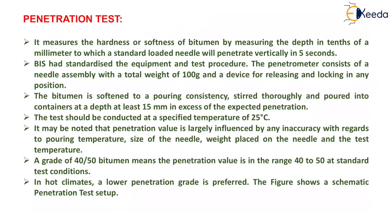The bitumen is softened to a pouring consistency, stirred thoroughly, and poured into a container at a depth of at least 15 mm in excess of the expected penetration. The test should be conducted at a specified temperature of 25 degrees Celsius. It may be noted that the penetration value is largely influenced by any inaccuracy with regards to pouring temperature, size of the needle, weight placed on the needle, and the test temperature. A grade of 40/50 bitumen means the penetration value is in the range of 40 to 50 at standard test conditions.